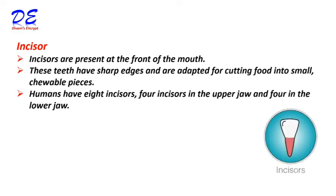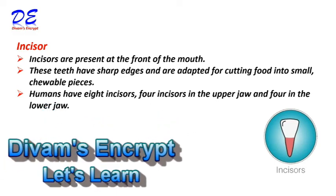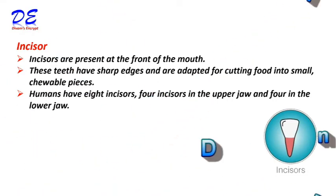Incisors are present at the front of the mouth. These teeth have sharp edges and are adapted for cutting food into small chewable pieces. Humans have eight incisors — four in the upper jaw and four in the lower jaw.